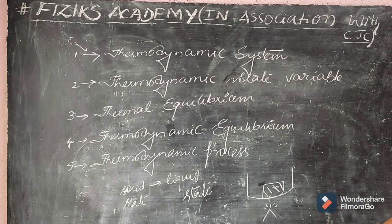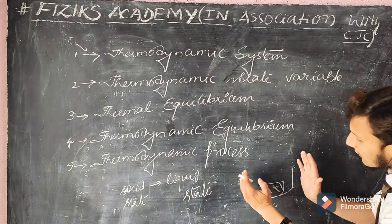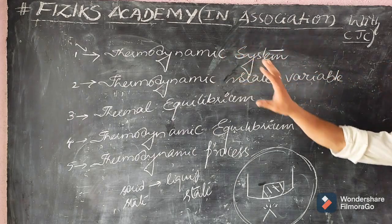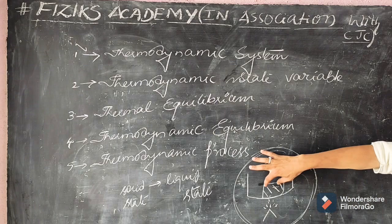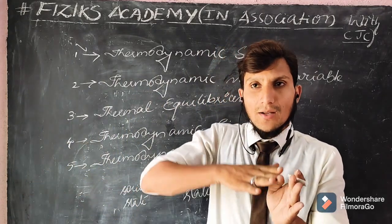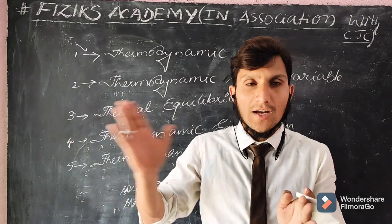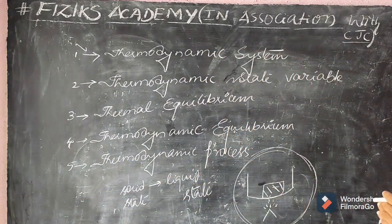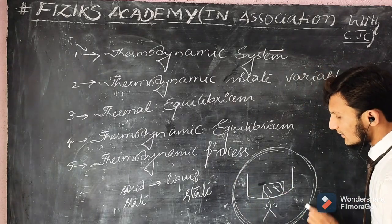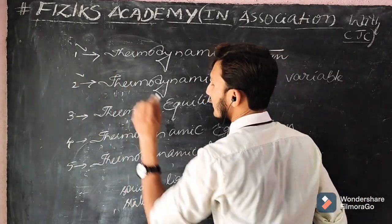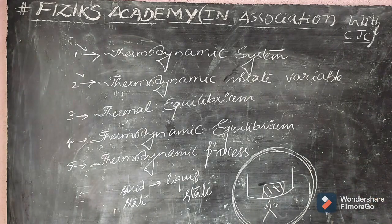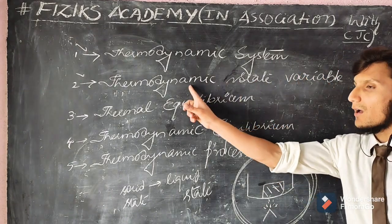You are observing and studying this particular container, so this specific region becomes your thermodynamic system. When you supply heat to the ice cube, it transfers from solid to liquid state — its temperature, volume, shape, and pressure all change. The physical quantities that correctly explain a thermodynamic system are called thermodynamic state variables, and the region under study is the thermodynamic system.